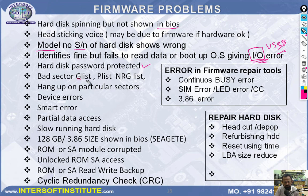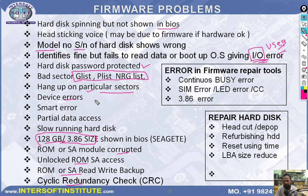Bad sector defect lists (G-list, P-list, NRG-list) can be repaired to recover data. Hanging on a particular sector — we can skip that sector and recover. Other firmware issues include: device errors, SMART errors, partial data access, slow running disk, wrong capacity showing (128 GB or 3.86 GB), ROM or service area module corruption, and locked ROM or service area. We can also repair continuous busy errors, SIM errors, LED errors, CC errors, and 3.86 errors in firmware repair. These will be covered in D4, D5, and D6 modules.